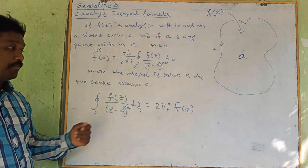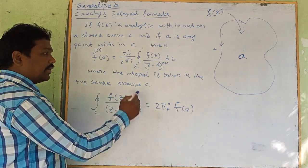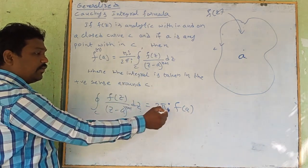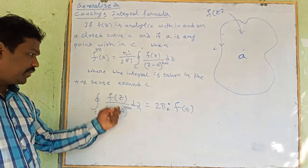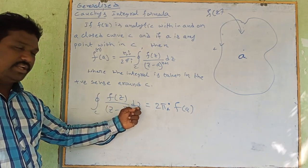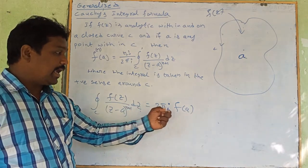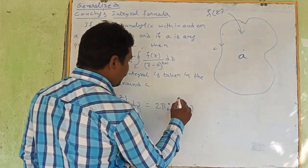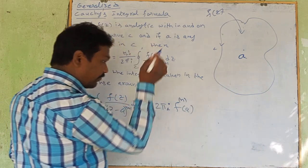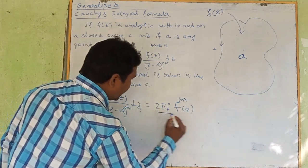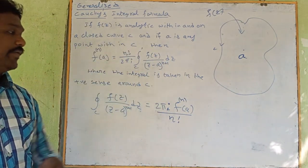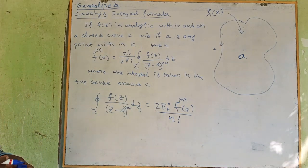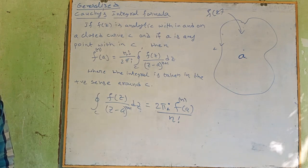To apply this in problems, the formula can be rewritten as: the integral over C of F(z) divided by (z minus a)^(n+1) dz equals 2πi times the nth derivative of F(a) divided by n factorial.